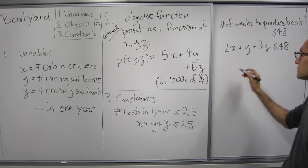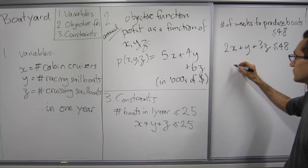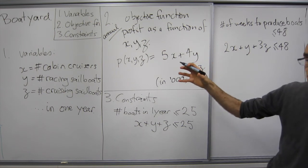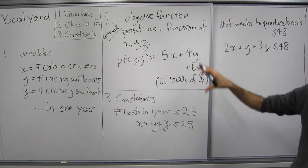Now we can't make a negative number of boats, so we also have to have a non-negativity condition on X, Y, and Z. So put all these together, our mathematical problem is to